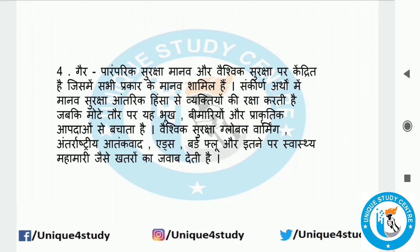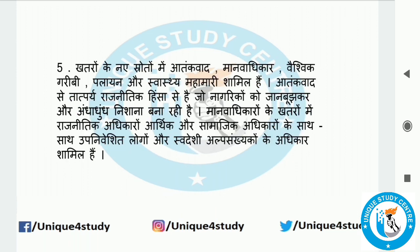यह सभी प्रकार की मानव सुरक्षा पर केंद्रित है जिसमें सभी प्रकार की मानव शामिल है। संकीर्ण अर्थों में मानव सुरक्षा आंतरिक हिंसा से व्यक्तियों की रक्षा करती है, जबकि मोटे तौर पर यह भूख, बीमारियों और प्राकृतिक आपदाओं से बचाता है। वैश्विक सुरक्षा में खतरों के नए स्रोतों जैसे आतंकवाद, वैश्विक गरीबी, पलायन और स्वास्थ्य शामिल हैं। आतंकवाद से तात्पर्य राजनीतिक हिंसा से है जहाँ नागरिकों को जान-बूझकर निशाना बनाया जाता है।